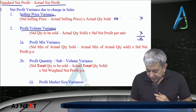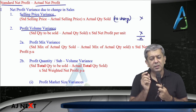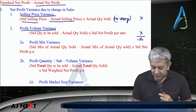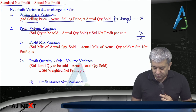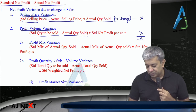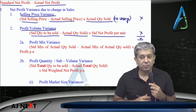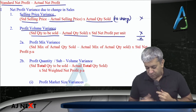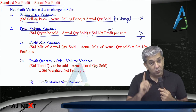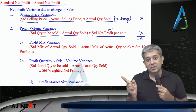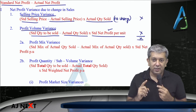The selling price variance is the same variance that was there under sales variances — no change. It is: standard selling price minus actual selling price, multiplied by actual quantity sold. For profit volume variance: budgeted units to be sold minus actual units sold, multiplied by standard net profit per unit. Remember — when you did sales variances, you multiplied by standard selling price because it was sales volume. Profit volume variance, so multiply by standard net profit per unit.